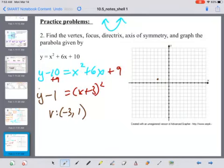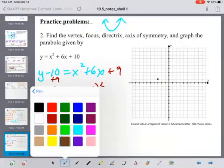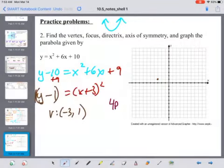I have, with that y minus 1, I have a 1 out in front. So my 4p is equal to 1, which means my p value is 1 fourth.